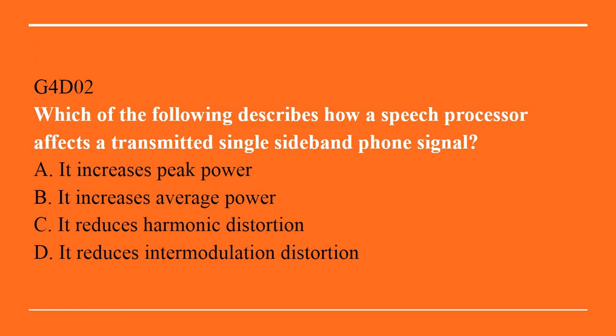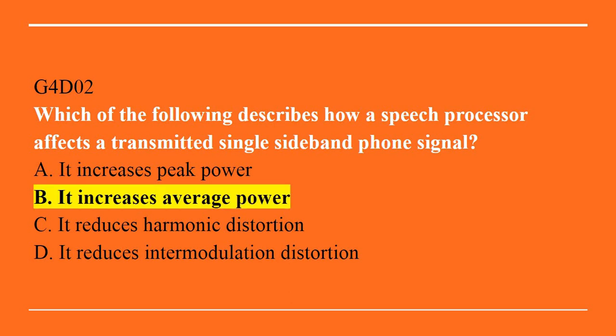G4D02: Which of the following describes how a speech processor affects a transmitted single sideband phone signal? A. It increases peak power. B. It increases average power. C. It reduces harmonic distortion. Or D. It reduces intermodulation distortion. The correct answer is B. It increases average power.